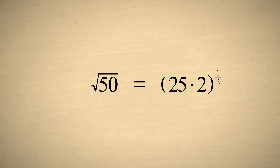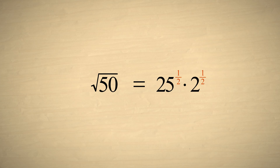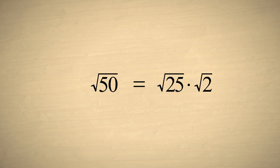We saw in the chapters on exponents that we can distribute the exponent outside the parentheses to each term within the parentheses. In other words, instead of taking the square root of the entire product, we can take the square root of each term separately. So the square root of 50 is equal to the square root of 25 times the square root of 2, or 5 times the square root of 2.